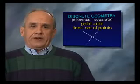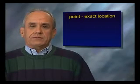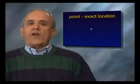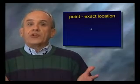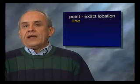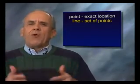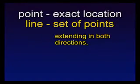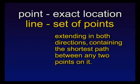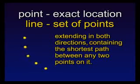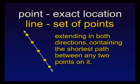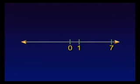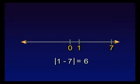Here's an example of another type of geometry. Suppose we describe a point as an exact location. We may represent it with a dot, but we are really focusing on the idealization of the dot with no size — the dot is only a picture of the point. A line is a set of points extending in both directions, containing the shortest path between any two points on it — meaning it has to be straight. You have dealt with this description before. Remember number lines? They were actually sets of exact locations, each of which had a number assigned to it. This allowed us to find the distance between any two points by finding the difference between the two coordinates and taking the absolute value of that result.